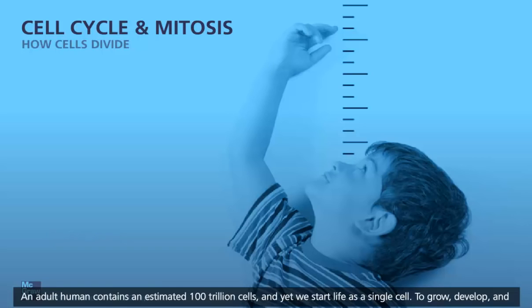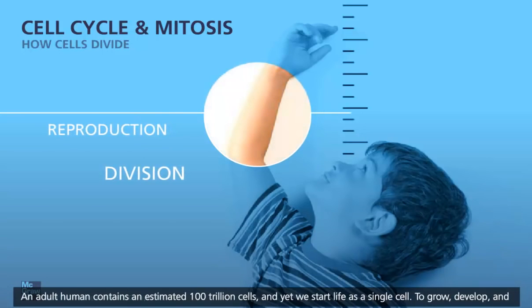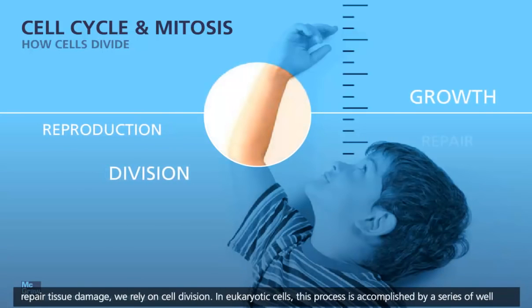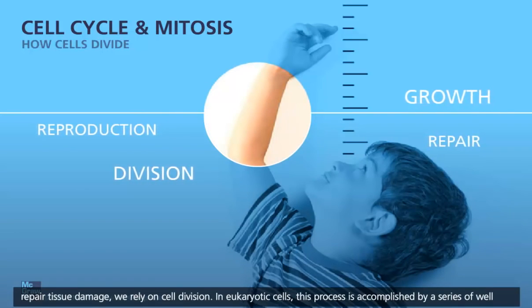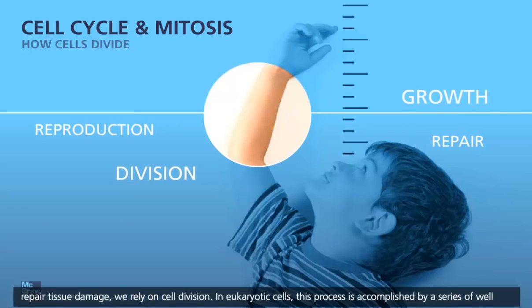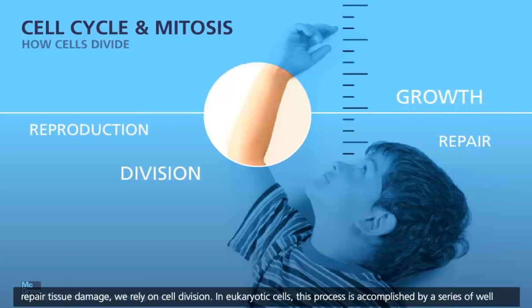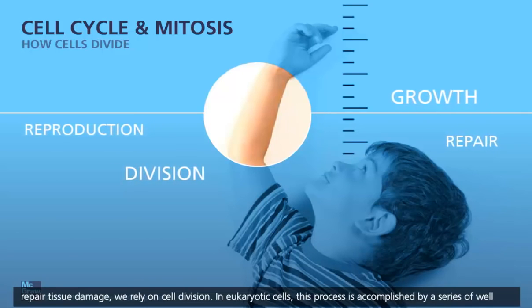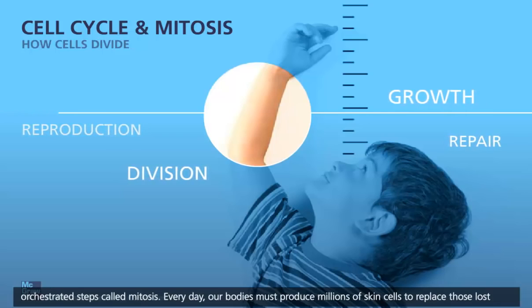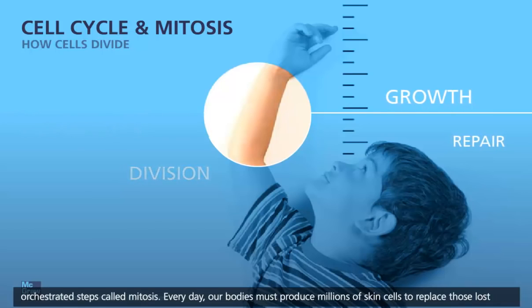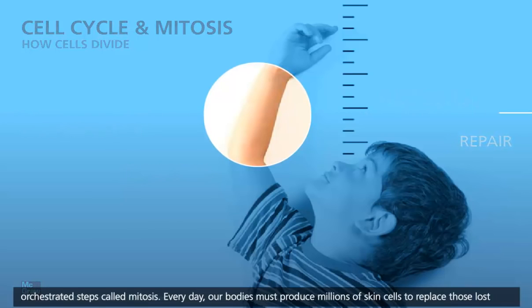An adult human contains an estimated 100 trillion cells, and yet we start life as a single cell. To grow, develop, and repair tissue damage, we rely on cell division. In eukaryotic cells, this process is accomplished by a series of well-orchestrated steps called mitosis.